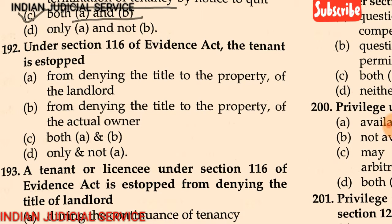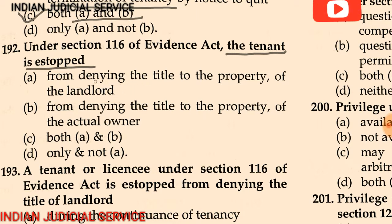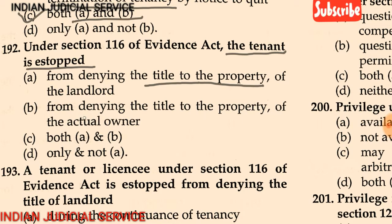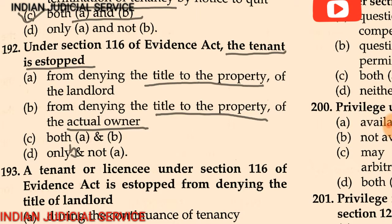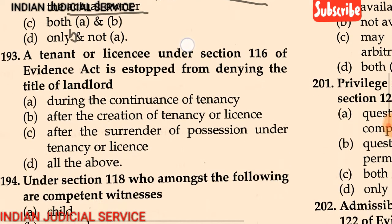Question 192: Under section 116 of the Evidence Act, the tenant is estopped from — (A) denying the title to the property of the landlord, (B) denying the title of the property of the actual owner, (C) both A and B, (D) only B, not A. The answer is option A: by denying the title of the property of the landlord.